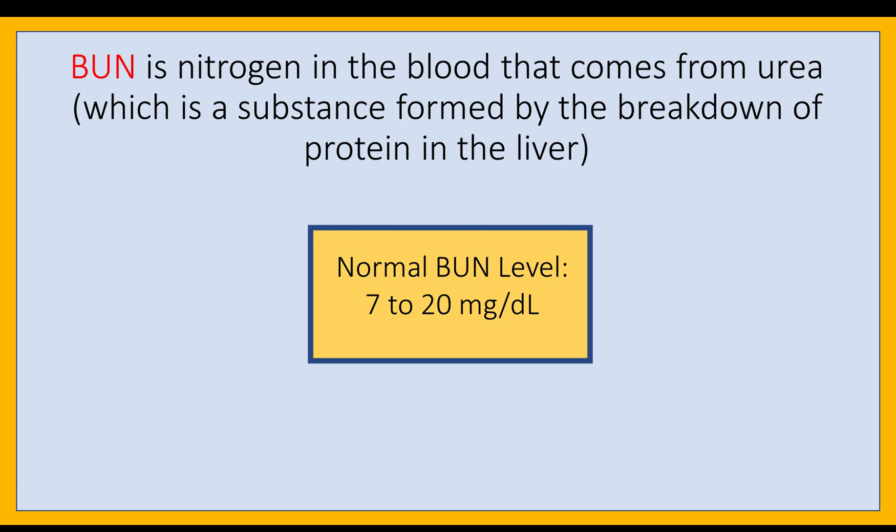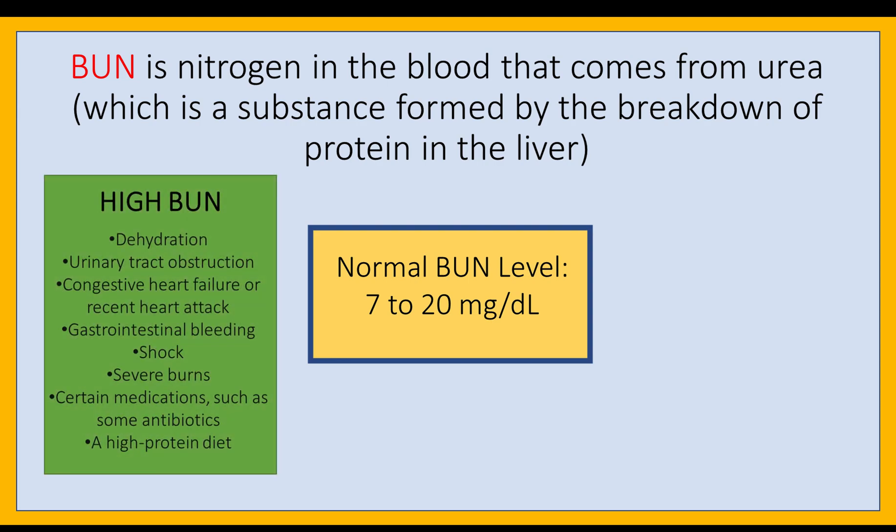A BUN test can reveal whether your urea nitrogen levels are higher than normal, suggesting that your kidneys may not be working properly. Generally, a high BUN level means your kidneys aren't working well. But elevated BUN can also be due to dehydration resulting from not drinking enough fluids, urinary tract obstruction, congestive heart failure or recent heart attack, gastrointestinal bleeding, shock, severe burns, certain medications such as some antibiotics, or a high protein diet.